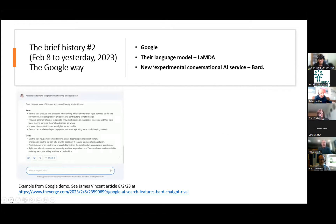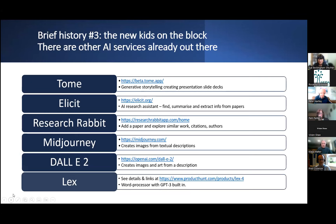And the Google way — they also made a major announcement on February 8th. They showed off their language model, which underpins BARD, the AI service they showed off. Unfortunately it made a blunder on their first outing, which had financial repercussions for the company, but they will resolve that. On the left-hand side of the screen is an example from the Google demo — the question was about how you might buy an electric car and the pros and cons.